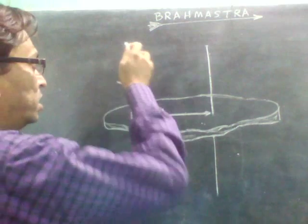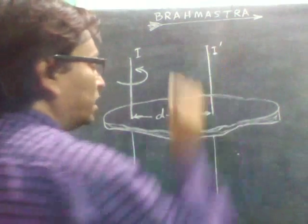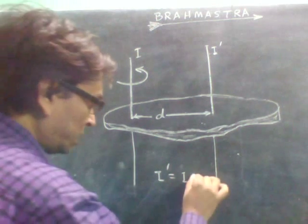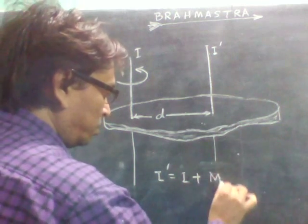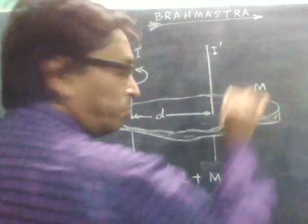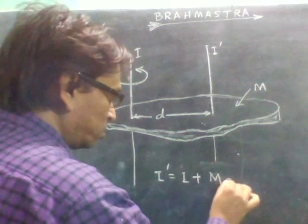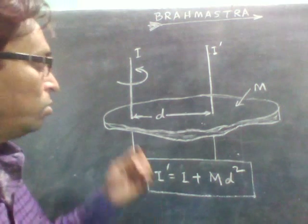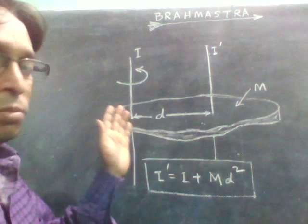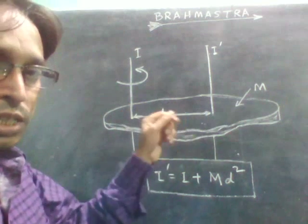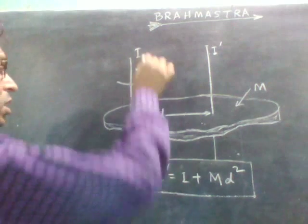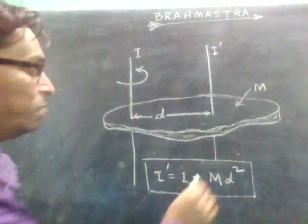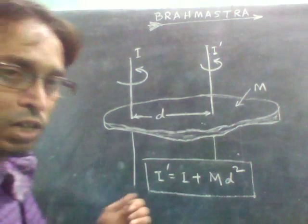So if we change the axis parallelly — this is one axis and this is another parallel axis — then we can apply this formula. The moment of inertia about the new axis, say I dash, is given as I dash equals I plus M times D squared, where M is the total mass of the body and D is the perpendicular distance between the two parallel axes. This describes the parallel axis theorem.